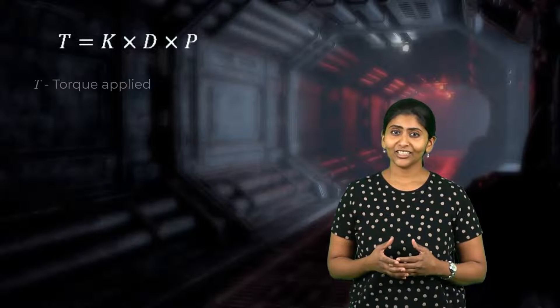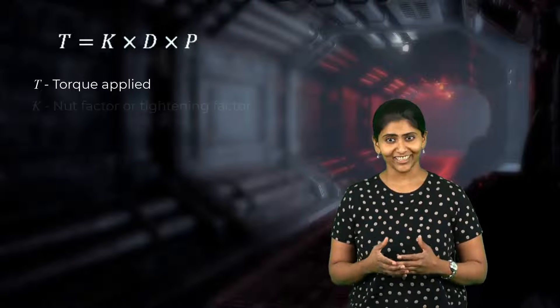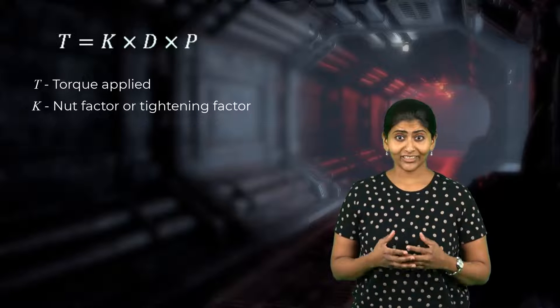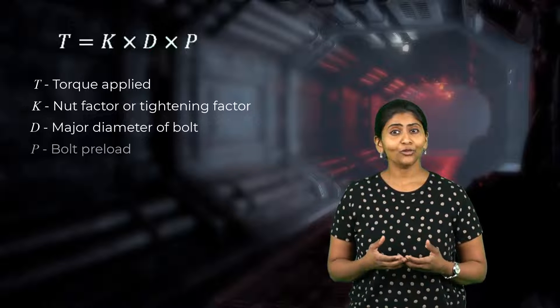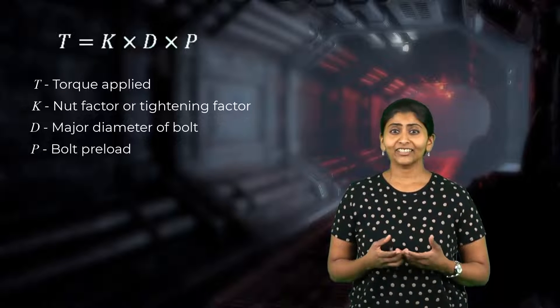While tightening a bolt, how do we know whether the amount of preload in the bolt has reached the desired value? Measuring the torque applied to tighten the bolt is easier than measuring the bolt preload directly. Hence, we need a relation between the torque applied and the bolt preload. The torque T can be calculated as the product of the nut factor K, the bolt major diameter D, and the bolt preload P.